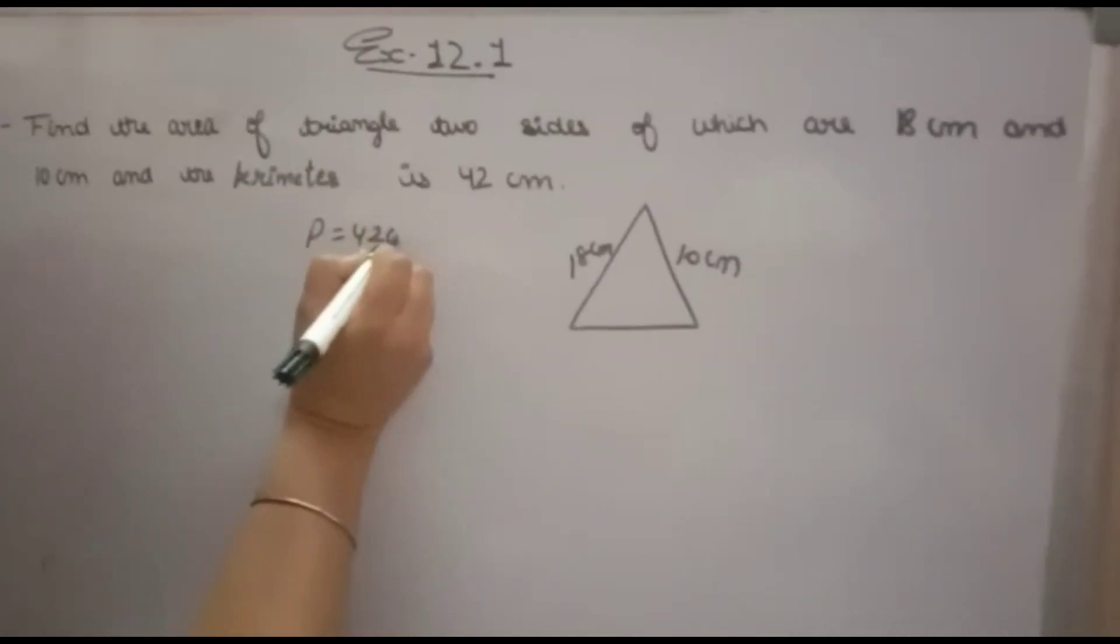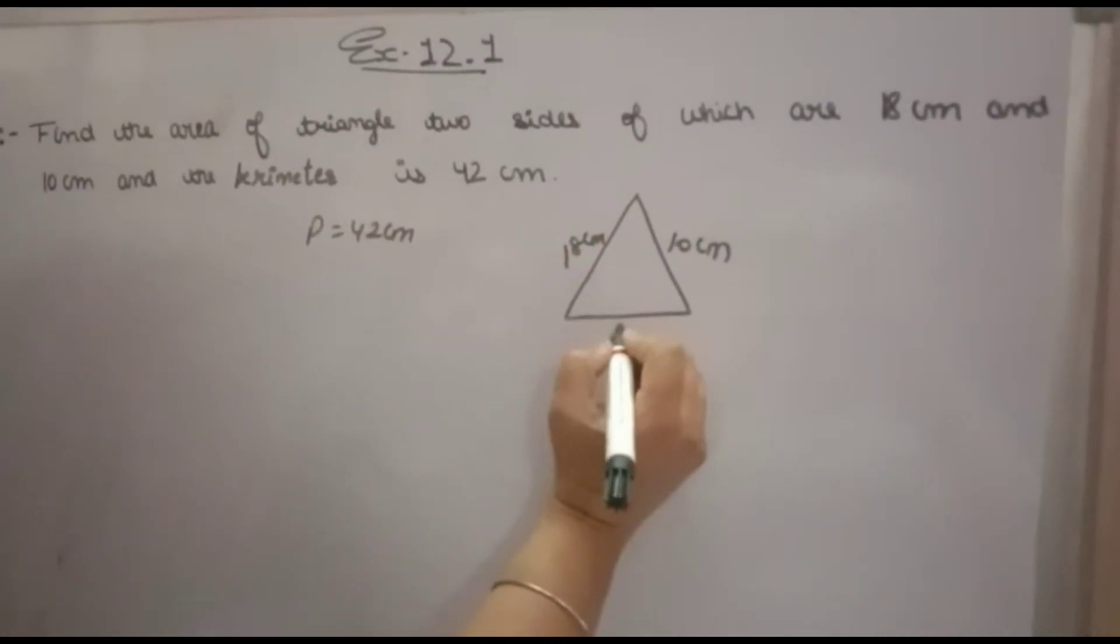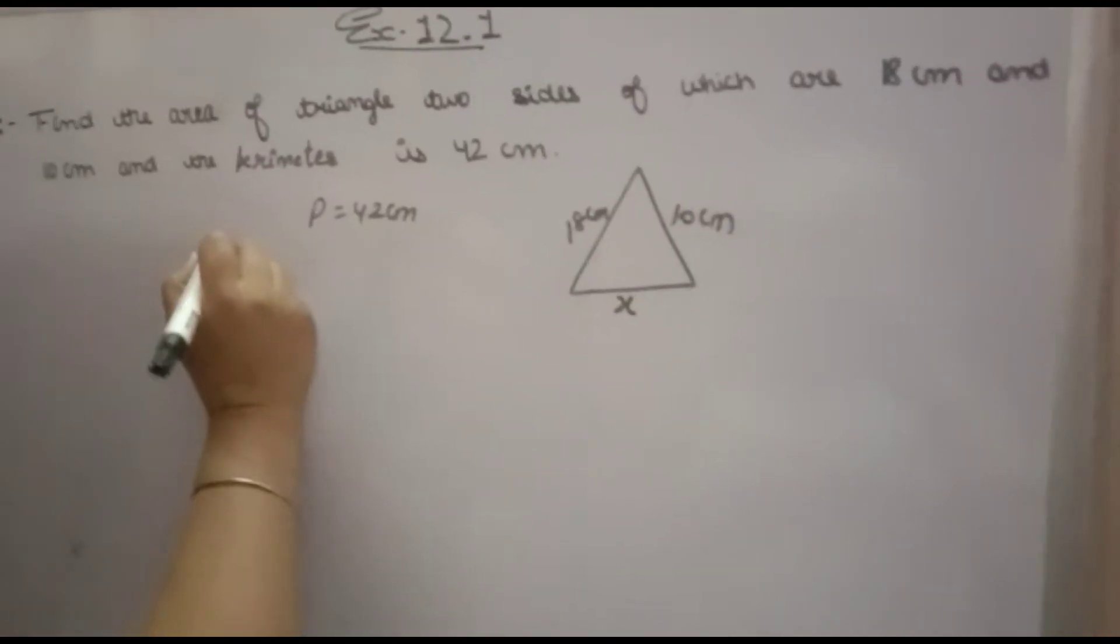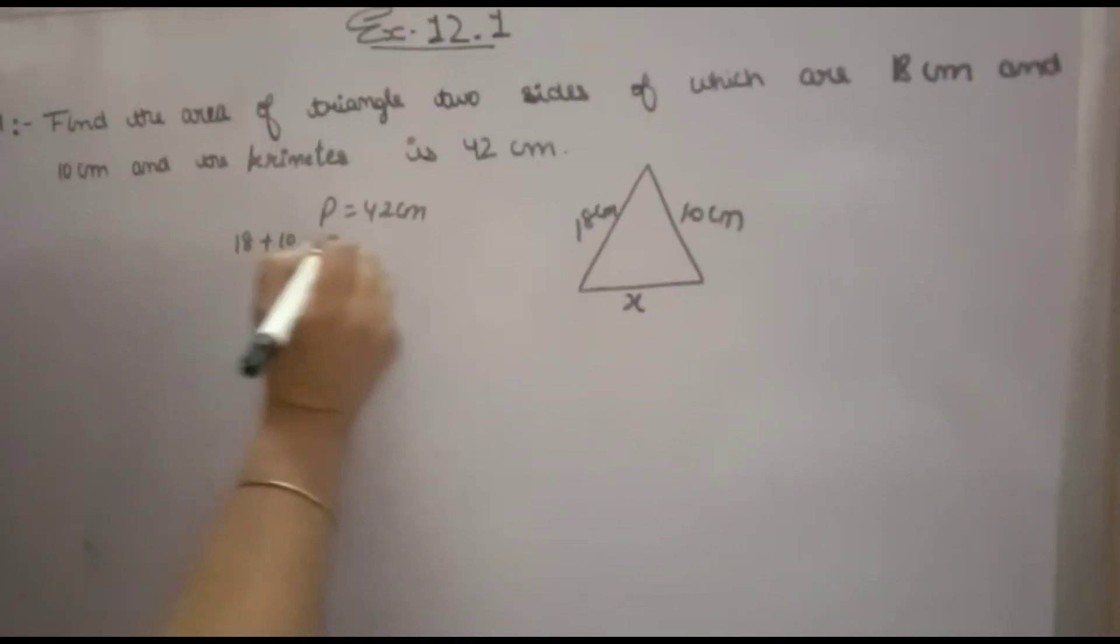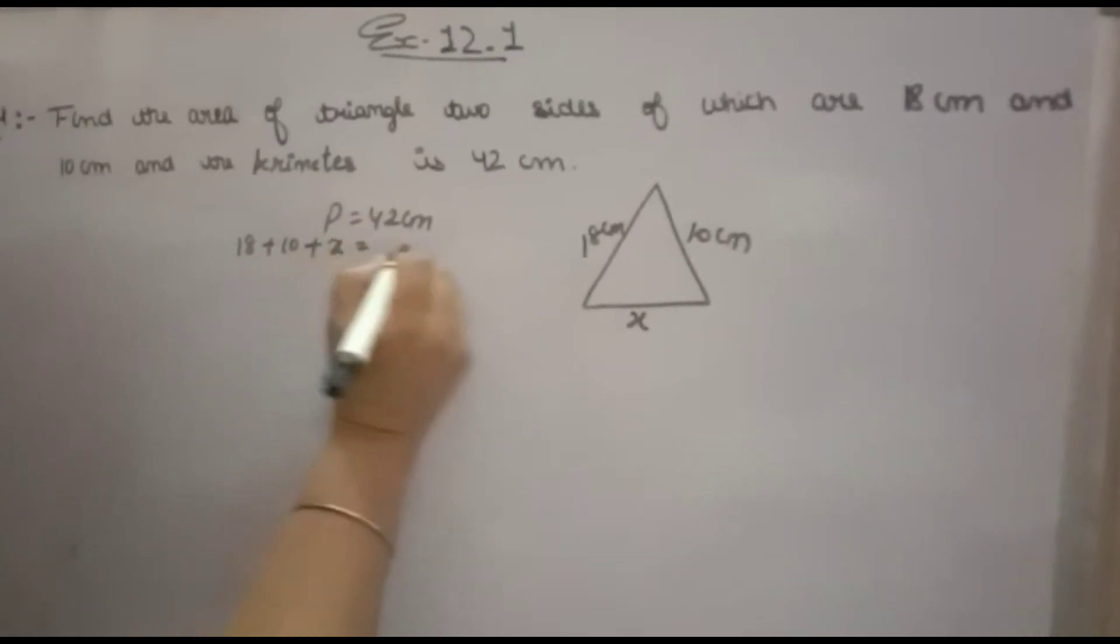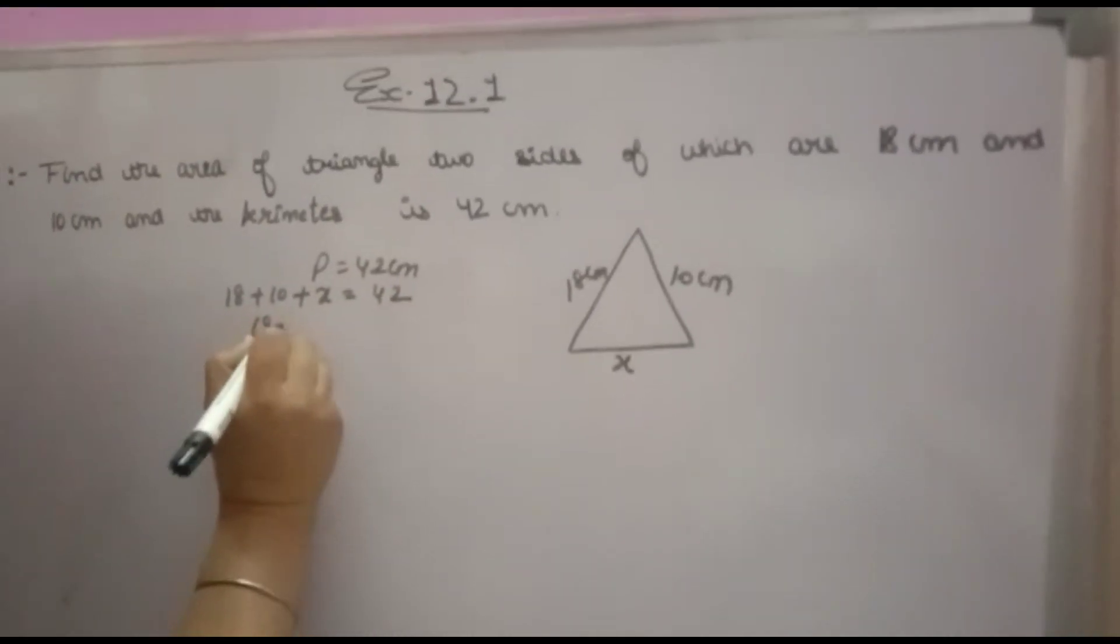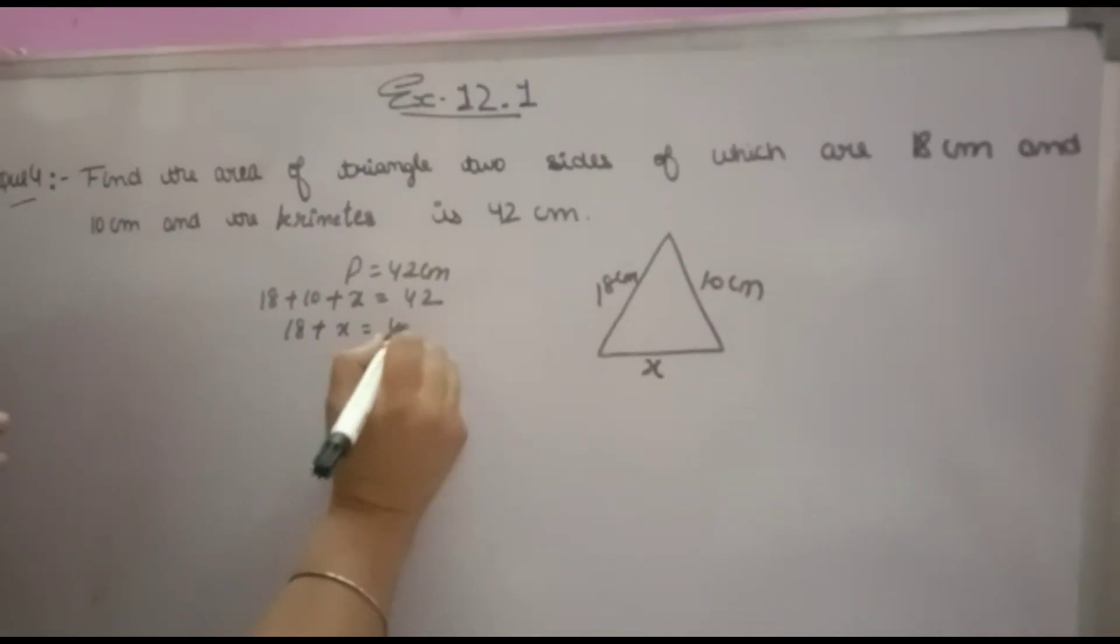The perimeter of this triangle is 42 centimeters. Let the third side be X. Perimeter means the sum of all sides, so 18 + 10 + X = 42, which means 28 + X = 42.